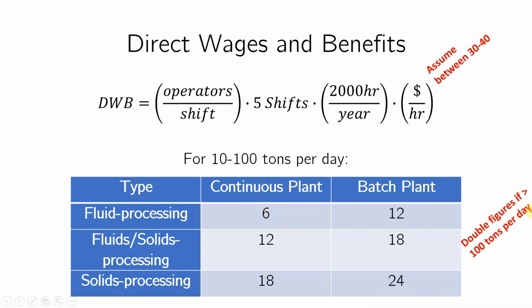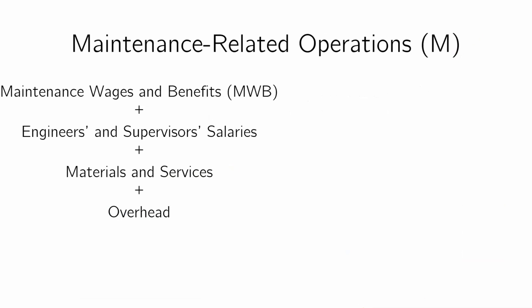Now, maintenance-related operations, M, covers things required around the operations but not directly related to production. This includes overhead items — anything not directly related to manufacturing or maintenance but still required for workers in the plant, such as a cafeteria, transportation, HR, medics, janitorial services, warehouses, recreational facilities, safety and fire protections, office supplies, heating, electricity, and internet for offices.